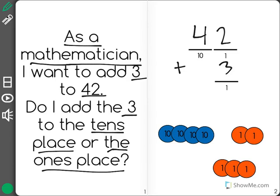As you can see, the 3 fits in the ones place and the 42 has a 4 in the tens place and a 2 in the ones place.